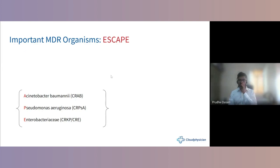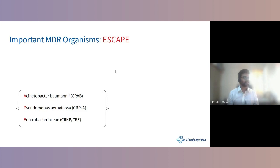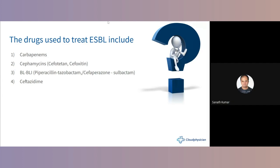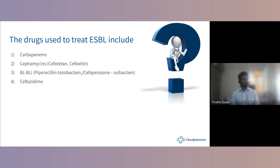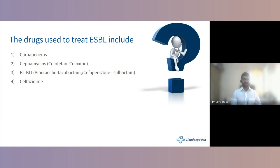Gram negatives are more common than gram positives in our ICU settings. MCQ: drugs used to treat ESBL include carbapenems, which are the drug of choice. However, cefamycins — cephamycin and cefoxitin — fifth-generation cephalosporins, are also used for ESBL. Piperacillin alone is resistant, but piperacillin-tazobactam (a beta-lactamase inhibitor combination) can be used. Ceftazidime alone is not effective — it is actually resistant to MDR organisms.